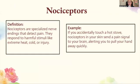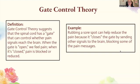Nociceptors are specialized nerve endings that detect pain. They respond to harmful stimuli like extreme heat, cold, or injury. So if you accidentally touch a hot stove, the nociceptors in your skin send a pain signal to your brain, alerting you to pull your hand away quickly. The gate control theory suggests that the spinal cord has a gate that can control whether pain signals reach the brain. When the gate is open, we feel pain; when it's closed, the pain is blocked or reduced. Rubbing a sore spot can help reduce pain because it closes the gate by sending other signals to the brain, blocking some of the pain messages.